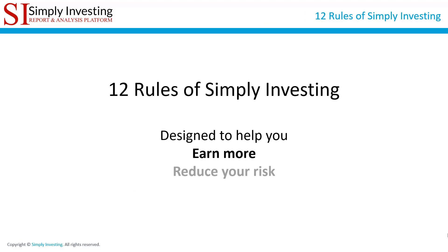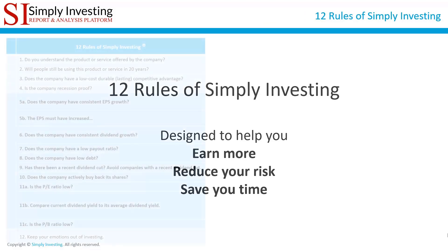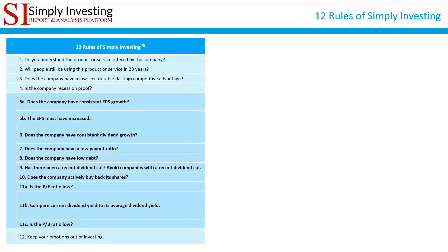The 12 rules of Simply Investing are designed to help you earn more, reduce your risk, and save you time. Here are the 12 rules listed on the screen. If you're interested in learning more about them, they are covered in detail in the Simply Investing online course. Ideally it's best to invest in a stock that passes all of these 12 rules — you know you are looking at a quality company when it passes all of the rules listed on the screen.